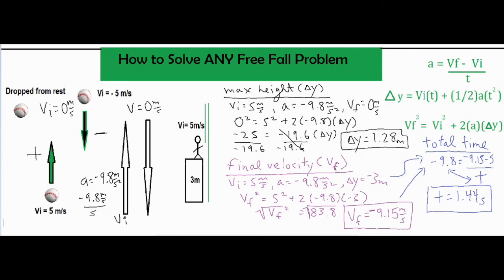I got a total time of 1.44 seconds. I used my acceleration of negative 9.8, and remember it's vf minus vi, so I had negative 9.15 minus that initial velocity of 5 over t, and I basically just cross-multiplied these two, so the negative 9.8 dropped under this negative 14.15, and I got 1.44 seconds in total.